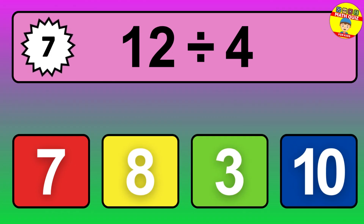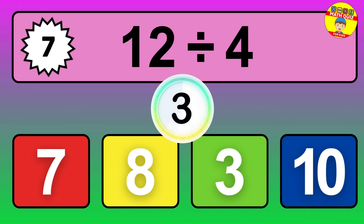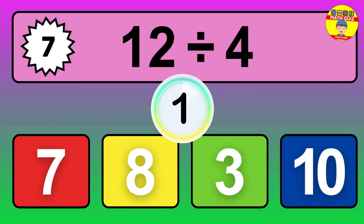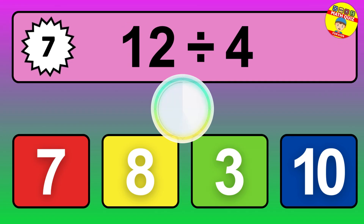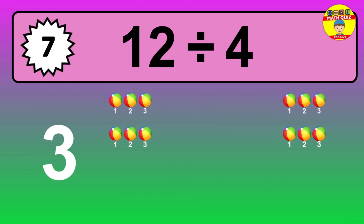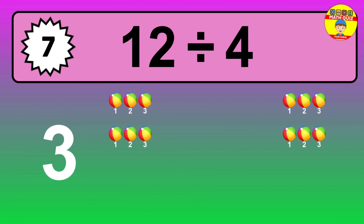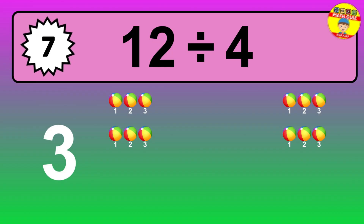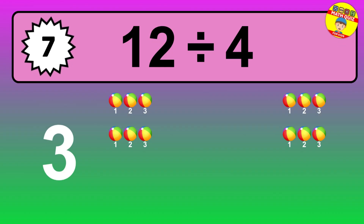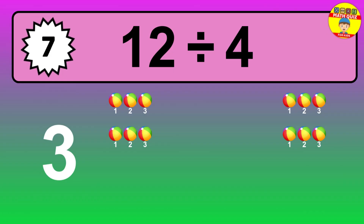12 divided by 4 — time to think. Let's go to the solution. Divide the number 12 by 4. Each group contains 4 units, so dividing 12 by 4 results in 3 equal groups. Thus, the result is 12 divided by 4 equals 3.